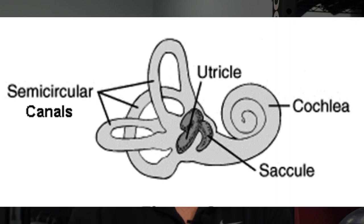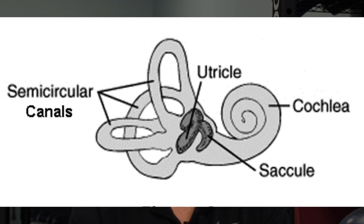One thing that can go wrong is if the crystals from the utricle and saccule move into the wrong place — into the semicircular canals. This causes a condition called benign paroxysmal positional vertigo (BPPV). Those crystals press down on the hair cells and trick them into thinking the person is moving when they're not, causing the eyes to move and the person to feel and even see motion that isn't there. There are ways to correct this by moving the crystals back out of that region.